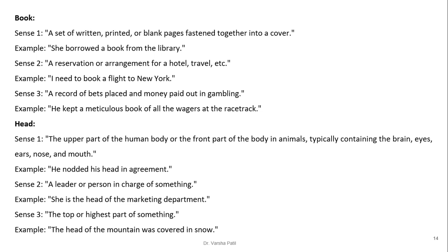More polysemy examples: 'Book' can mean a set of written or printed pages fastened together into a cover; a reservation or arrangement for a hotel or travel; or a record of bets placed and money paid out in gambling. 'Head' can mean the upper part of the human body containing the brain, eyes, ears, nose, and mouth; a leader or person in charge of something; or the top or highest part of something.